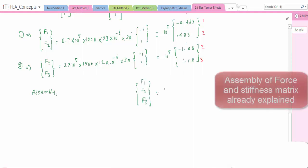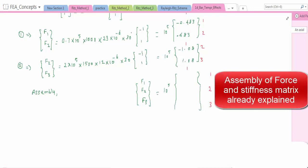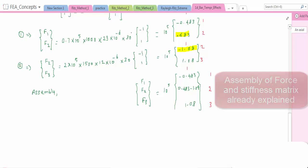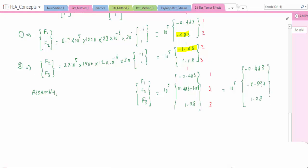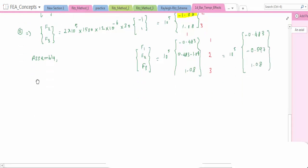So assembling the force and stiffness matrix, force matrix here 10^5 we will take it as a common for nodes 1, 2, 3. -0.483 for node 1, and for node 2 we have 0.483 and -1.08. Here 1.08. By simplifying this, we will get a force matrix of these values. This is force matrix without any additional nodal force.